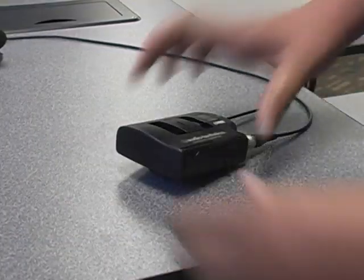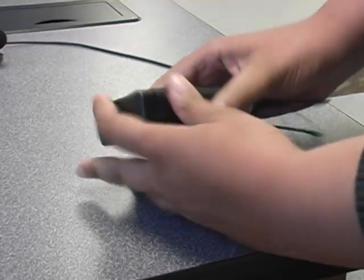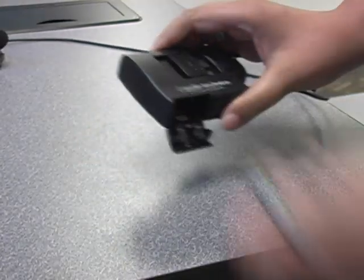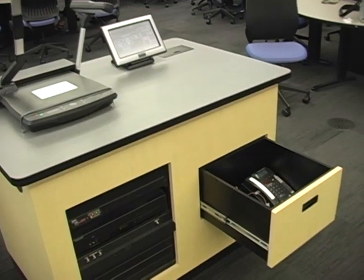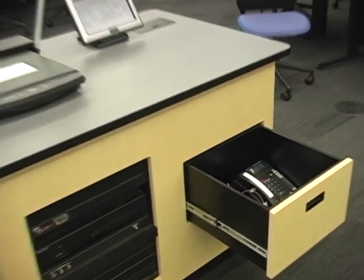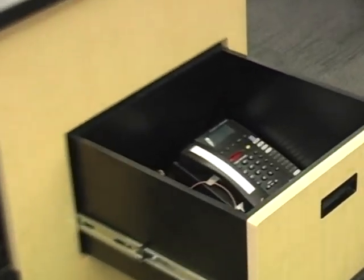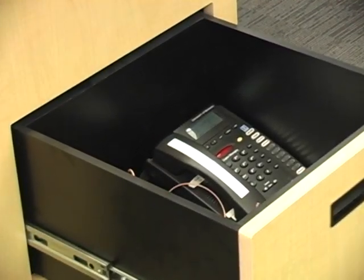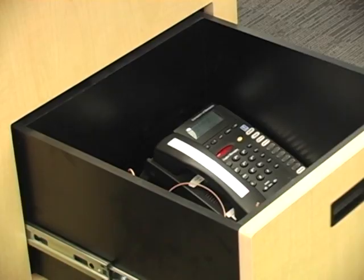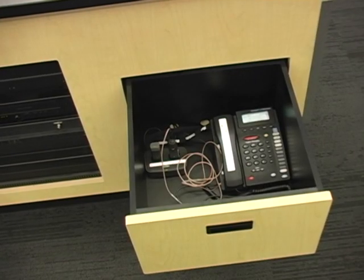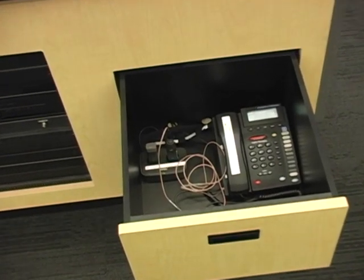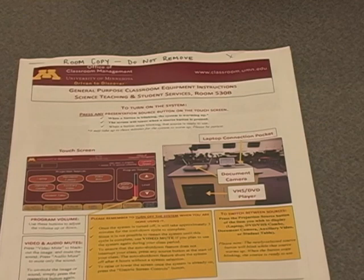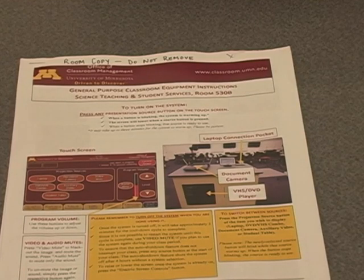If the microphone is not working, first try changing the batteries. Spare batteries are kept in either the drawer with the microphone or in the pocket of the instructor station. If the microphone still does not work or there are no spare batteries available, please call the classroom support hotline at 612-625-1086.